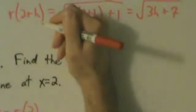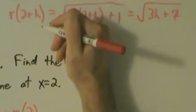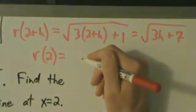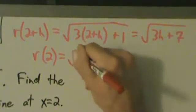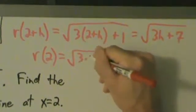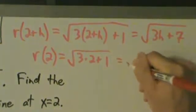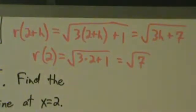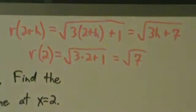Then next, we've got to figure out what's r(2). So let's go ahead and do that. r(2) equals what? Well, r(x) is the square root of 3x plus 1. So r(2) is the square root of 3 times 2 plus 1, which is 3 times 2 is 6 plus 1 is 7. So that's square root of 7. Pretty much the same as what's up here, but without the h.